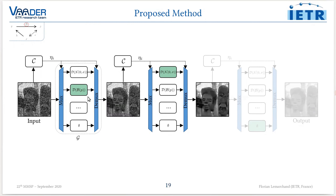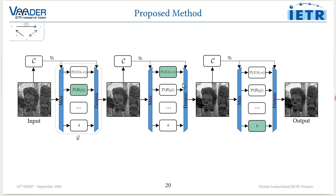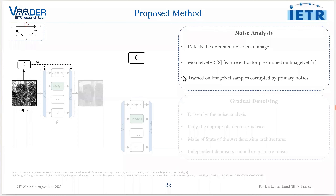Until noise is detected, the pool of denoisers removes noise components. Once no noise is detected anymore, the process exits and outputs the denoised image. The noise analysis is conducted by C, the classifier, which detects the dominant noise in the input image.